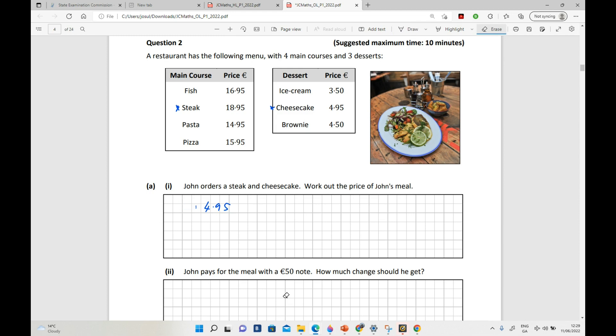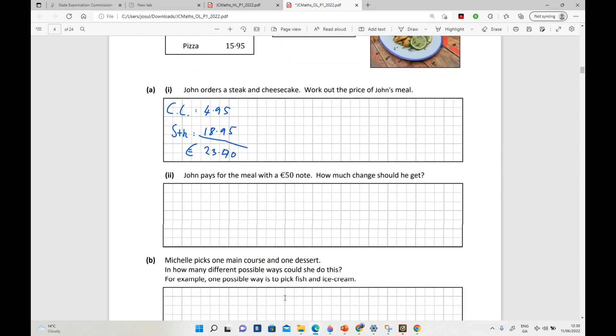Sorry, so we will put cheesecake and steak which is 18.95, and we simply add them together which is going to give us 23 euros and 90 cents. So that's the answer for the first part (a).